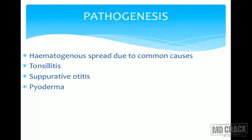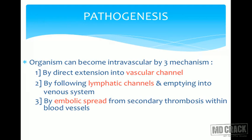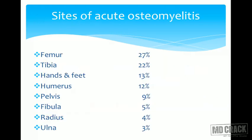The pathogenesis of acute osteomyelitis is mainly by hematogenous spread. Common causes include tonsillitis, suppurative otitis media, or pyoderma — pus present in the body. Organisms enter the intravascular system by three mechanisms: direct extension into vascular channels through the blood; through lymphatic channels emptying into the venous system; and by embolic spread from secondary thrombosis within blood vessels.